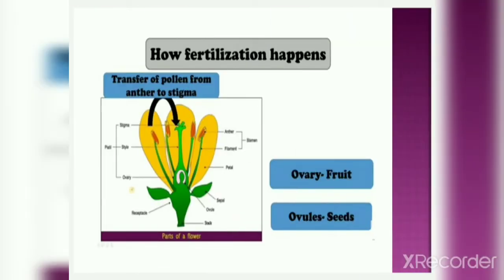We will now try to understand how fertilization happens in a flower. Pollen grains are produced in the anther and then pollen grains are transferred from the anthers to the stigma of the flower — by honeybees, by wind, by house flies. When pollen grains are transferred from anther to stigma, they will travel down through the style and will reach the ovary. In the ovary, eggs are present and the pollen grains will fertilize the eggs. That's how the ovules present in the ovary will turn into seeds and the ovary will turn into fruit.